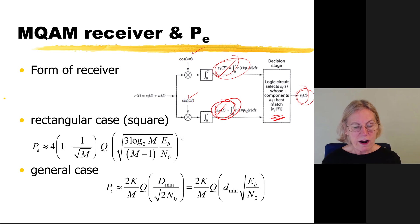And what comes out is an estimate of which symbol was sent. So that's the form of the receiver. And in the square case, we have an equation. And if it's not a square geometry, but it's one of these other arbitrary geometries, then we just go back to the general equation. And if you find the dmin, you count the number of pairs at the minimal distance, and you plug them into this equation.